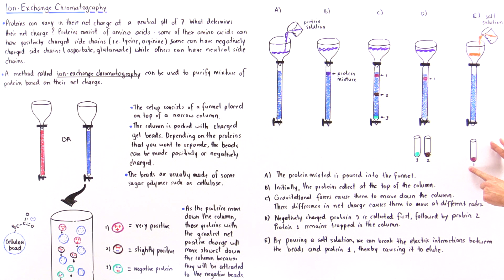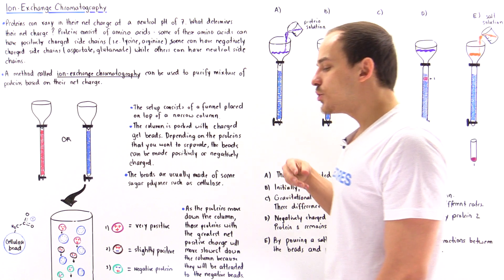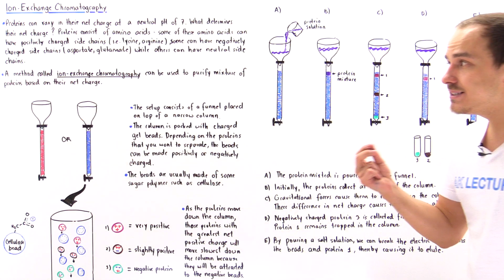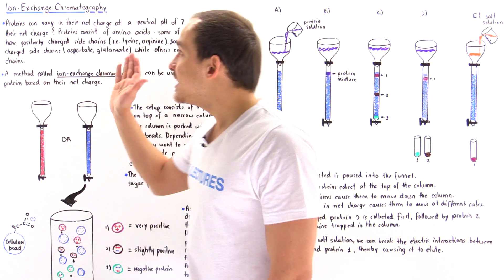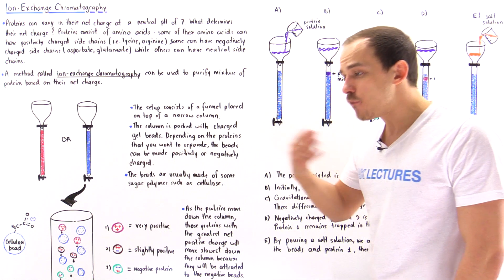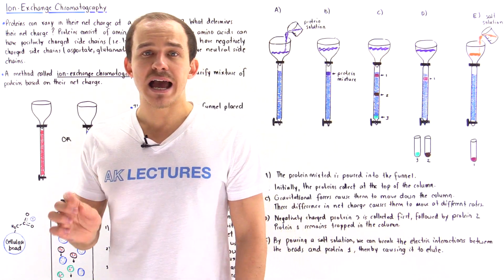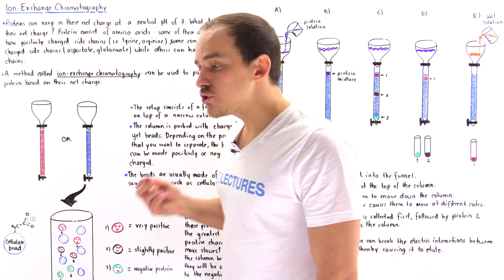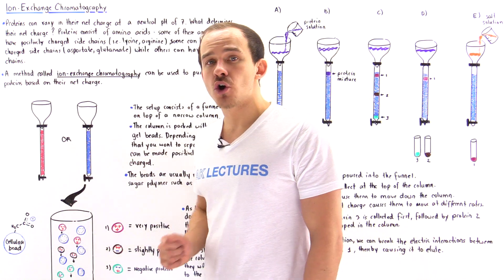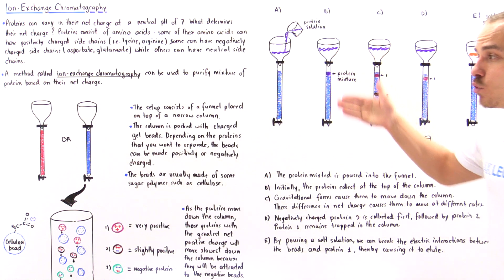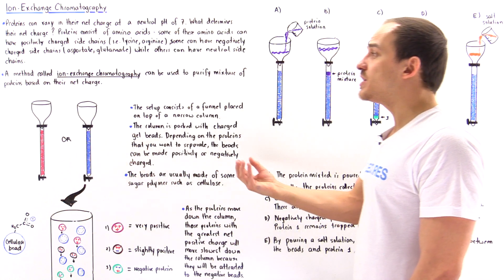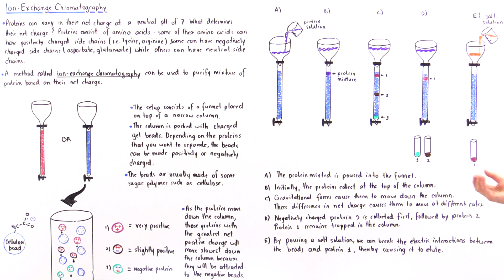Ion exchange chromatography is only helpful if there is a significant difference between the net charges on the proteins. We cannot use it to purify proteins if all the proteins in the mixture have the same net charge. For example, if all proteins have a net neutral charge, none of them will be attracted to the charged beads, meaning they will all move through the column at the same rate and cannot be separated into separate collections.